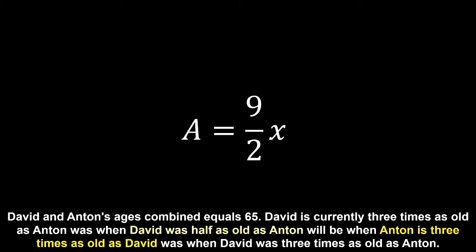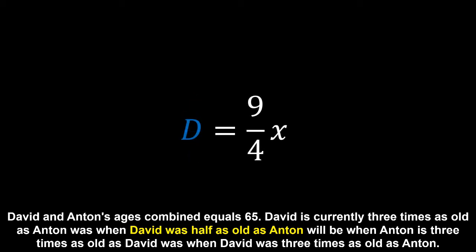Next, we want to know David's age when he was half of Anton's age for this time frame. We can skip through this a bit faster and divide both sides by two, replacing half Anton's age with David's age, so we can see that his age is represented as nine on four times the age difference.